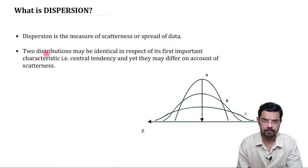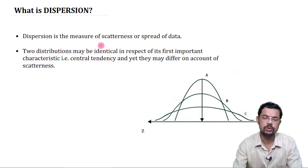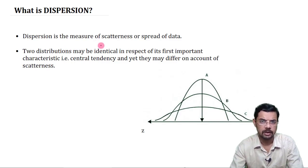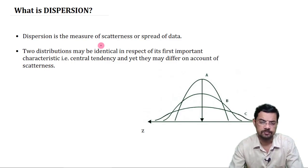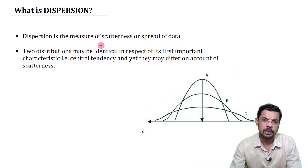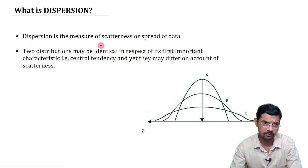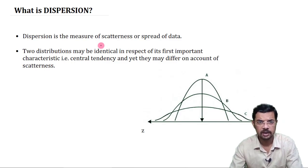Why do we measure dispersion? We measure it because two different distributions may have a different scatter or a different range, but they may have the same measure of central tendency — the same mean or the same median — yet they may be differently distributed.